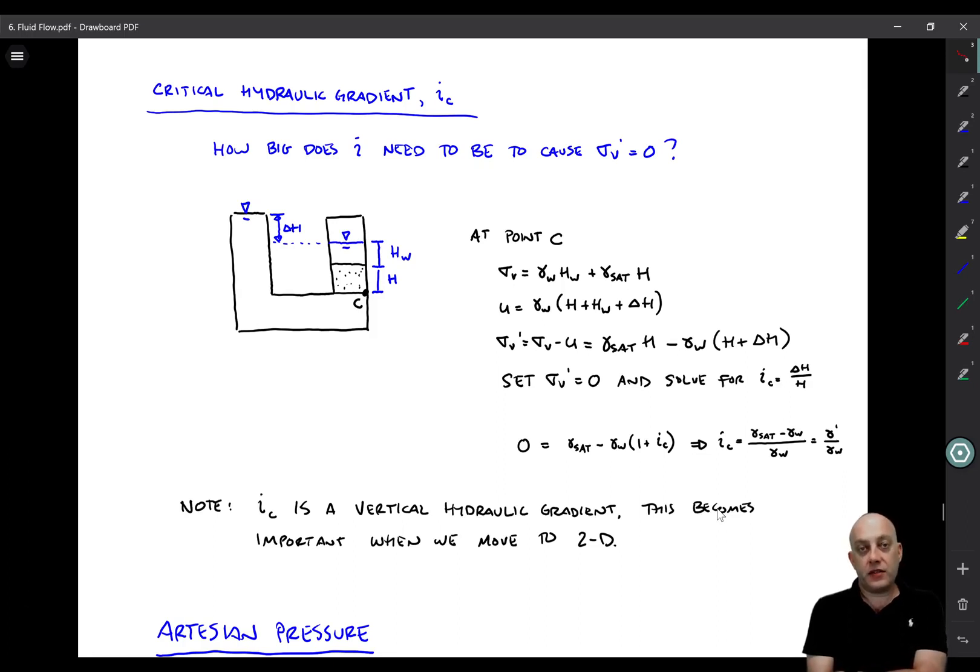So what we need to do now is set sigma V prime equal to zero, because that's what we're interested in understanding. How big does the hydraulic gradient need to be when sigma V prime is zero? And then we solve for the hydraulic gradient, the critical hydraulic gradient, which is delta H over H when sigma V prime is zero. So here we have zero is equal to gamma sat minus gamma W times 1 plus I C. So I've done this substitution throughout the equation. And then we can solve for I sub C. It's just equal to gamma sat minus gamma W divided by gamma W. And recall that this quantity on the top, gamma saturated minus gamma W, is simply equal to the buoyant unit weight gamma prime. So that's another way of thinking about it, gamma prime over gamma W. Very simple.